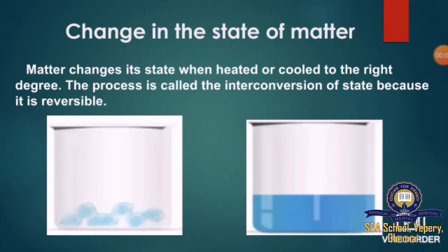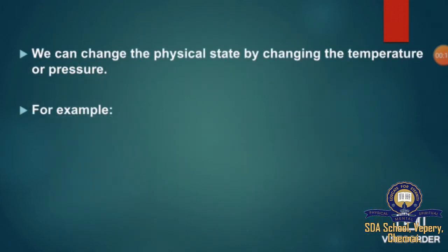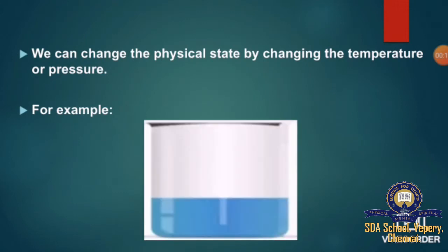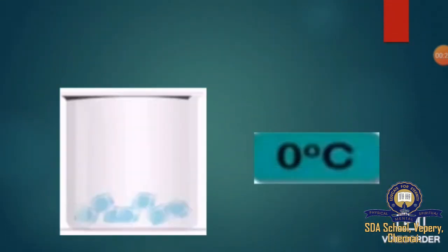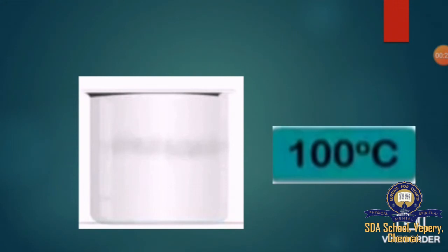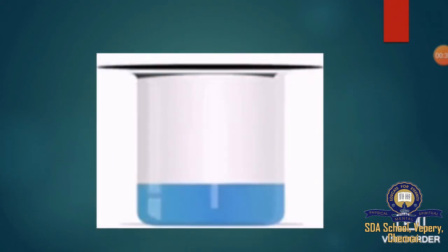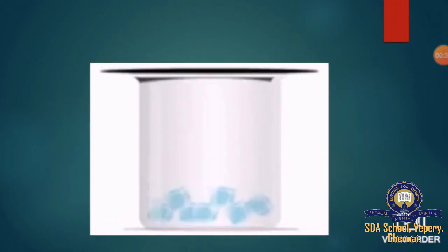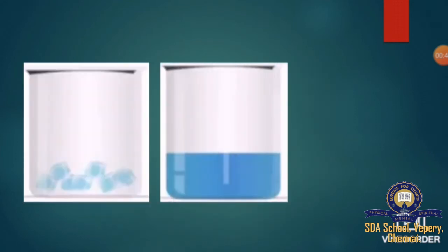Matter can be changed from one state to another; a substance can exist in any of the physical states. We can change the physical states by changing temperature or pressure. For example, water can be changed from liquid to solid ice at 0 degrees Celsius and from liquid to the gaseous state at 100 degrees Celsius. The process can also be reversed — if we cool the steam, we get water, which on further cooling changes to ice. We can conclude that water can exist in all three states: solid, liquid and gas.